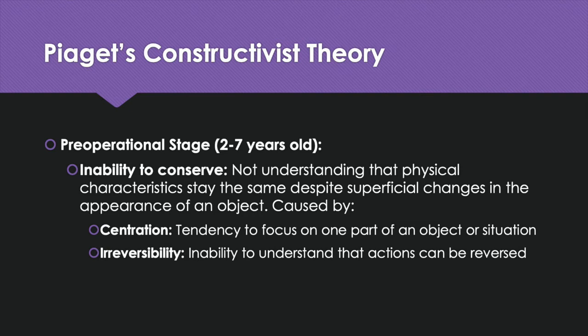Another core feature of the pre-operational stage is the inability to conserve — not understanding that physical characteristics stay the same despite an object changing shape or appearance. For example, if you pour water from a short, fat cup into a tall, skinny glass, the child will say there is more water because it appears that way, even though logic says it's the same amount. This happens for two reasons: centration, the tendency to focus on only one aspect of an object or situation (like the height of the glass); and irreversibility, the inability to understand that actions can be reversed — like pouring the water back.